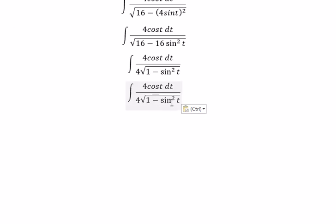1 minus sin t square, you got cos t square. The square root of cos t square, you got cos t. This one divide this one, we got dt.